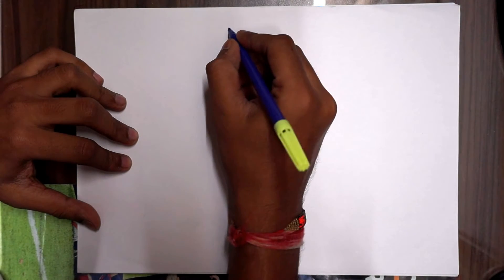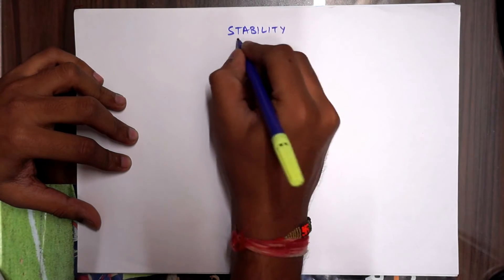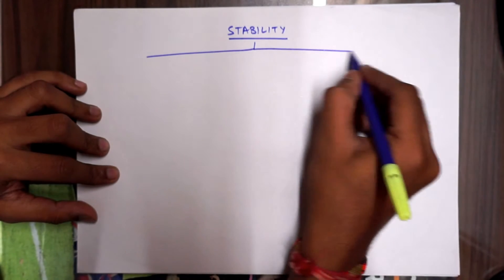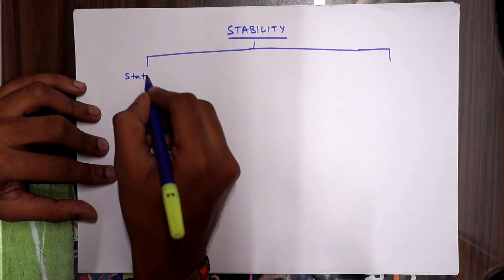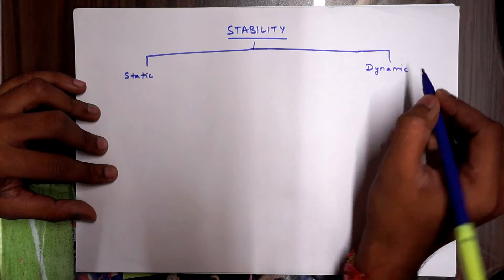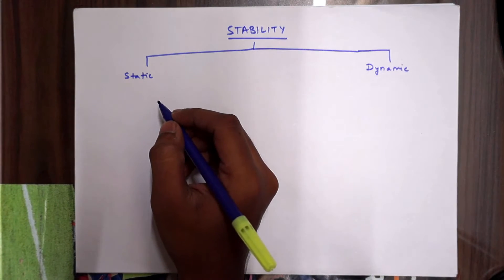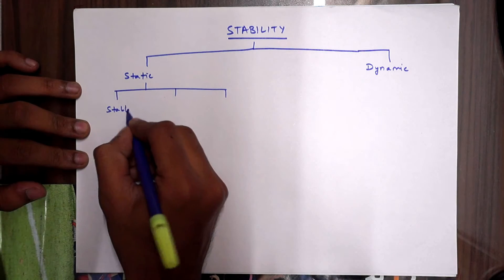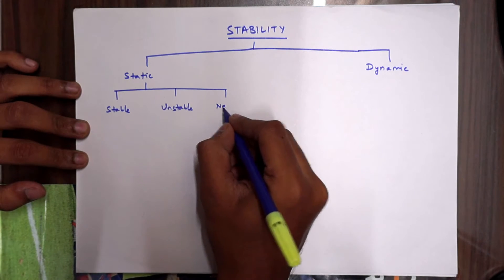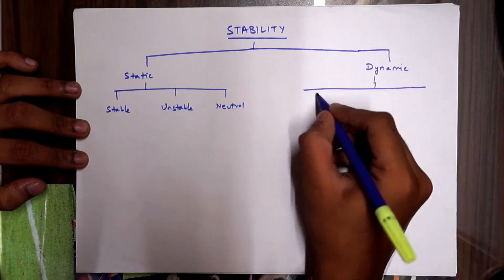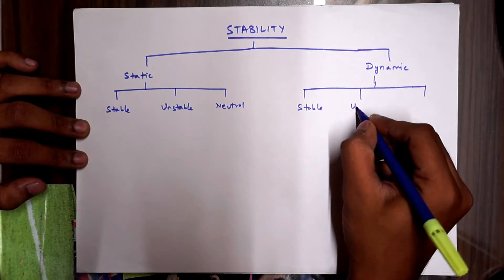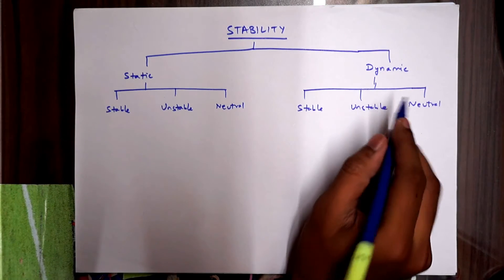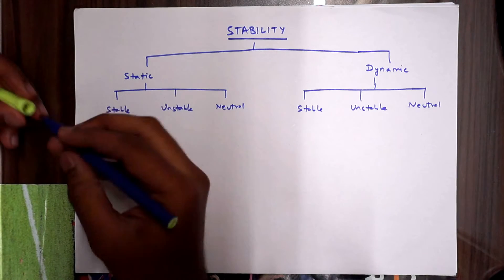Welcome back. Today we're going to discuss stability. Stability is generally divided into two parts: static and dynamic. Static is further divided into three parts — stable, unstable, and neutral. Similarly, dynamic is also divided into three parts — stable, unstable, and neutral. Along this video we'll be discussing what these three terms in each division mean.